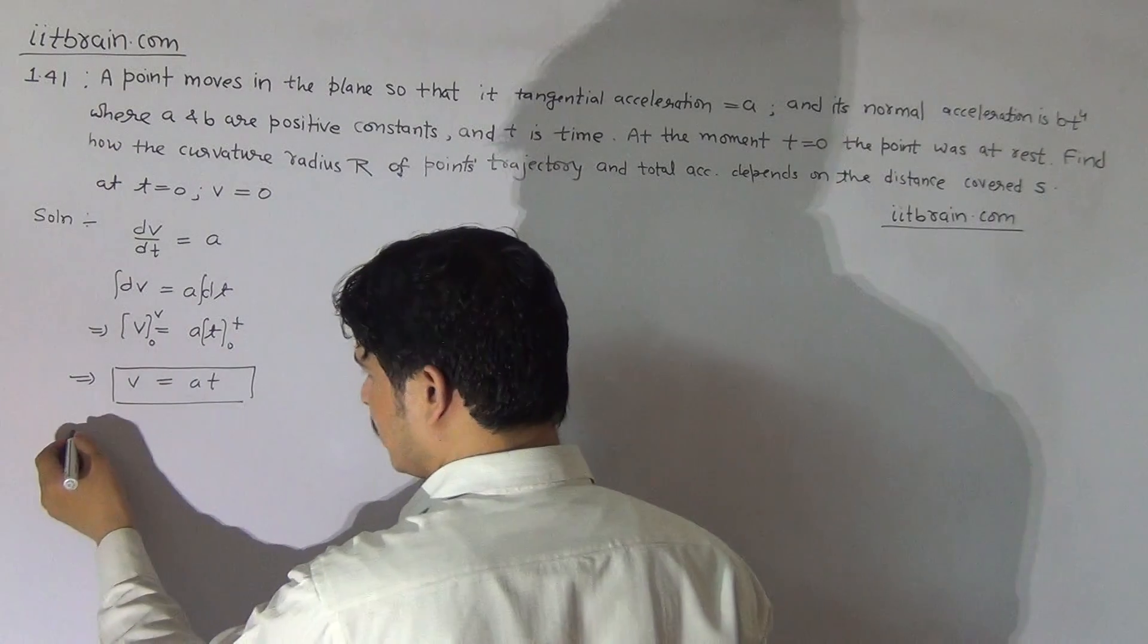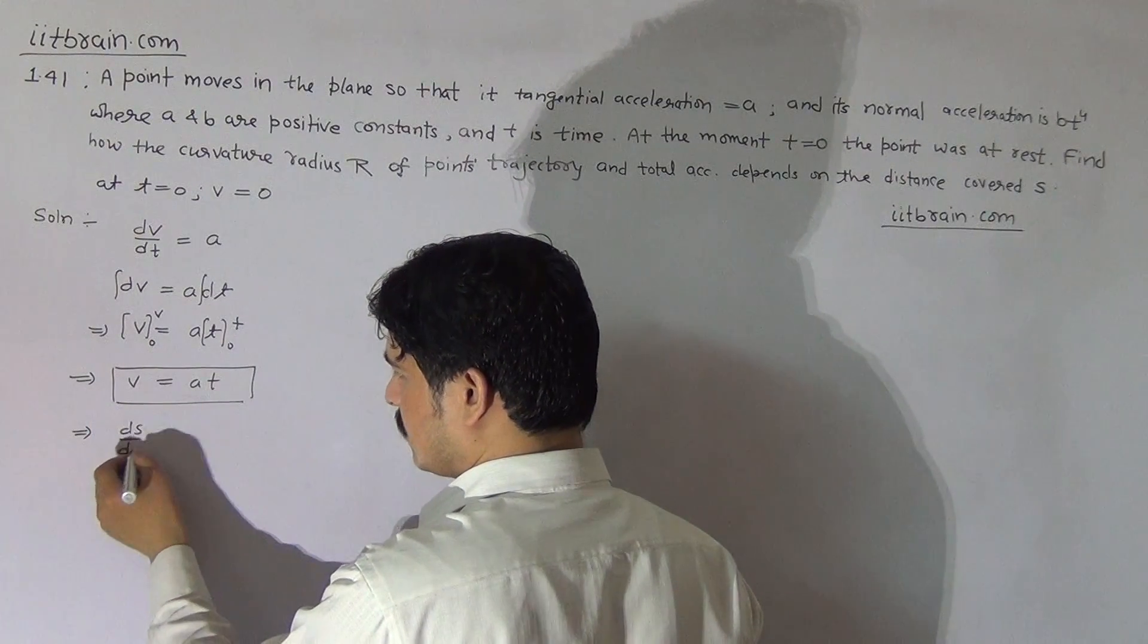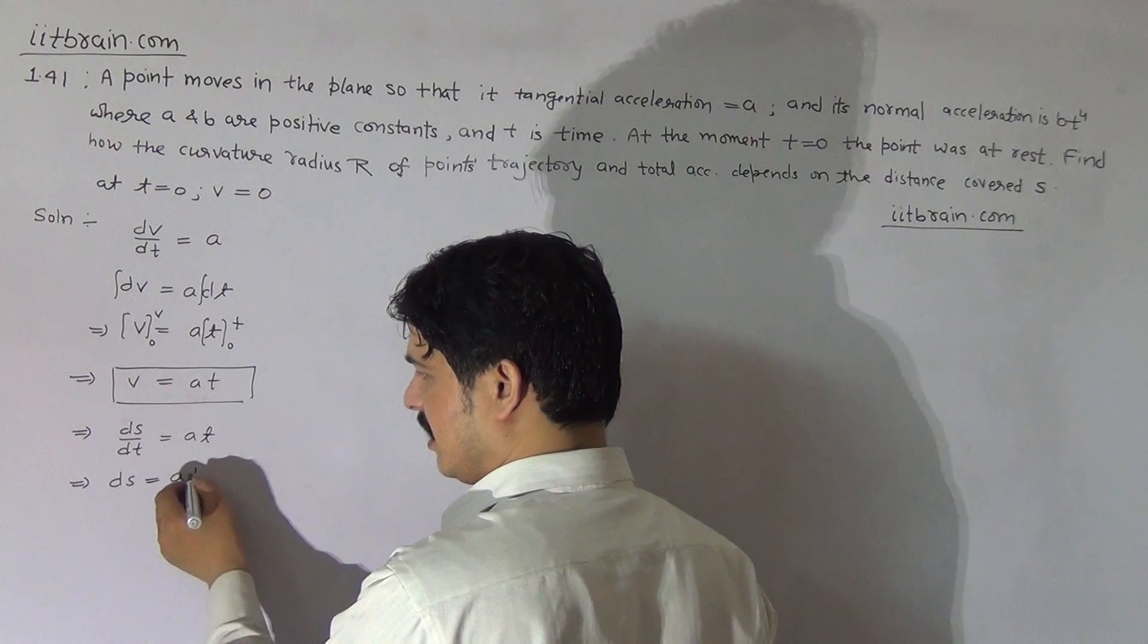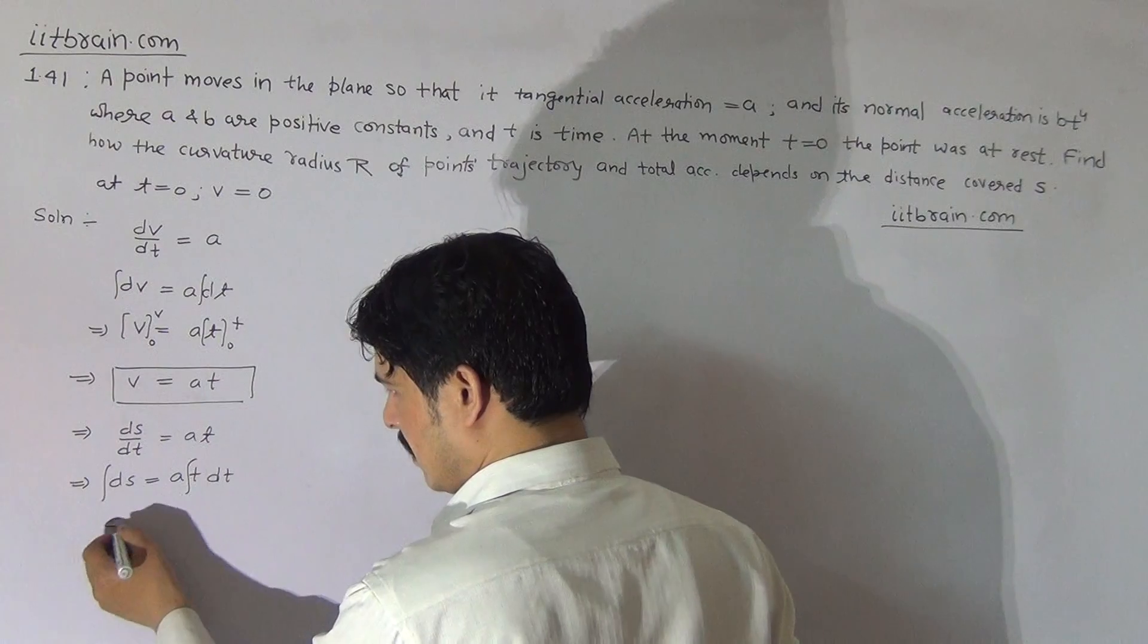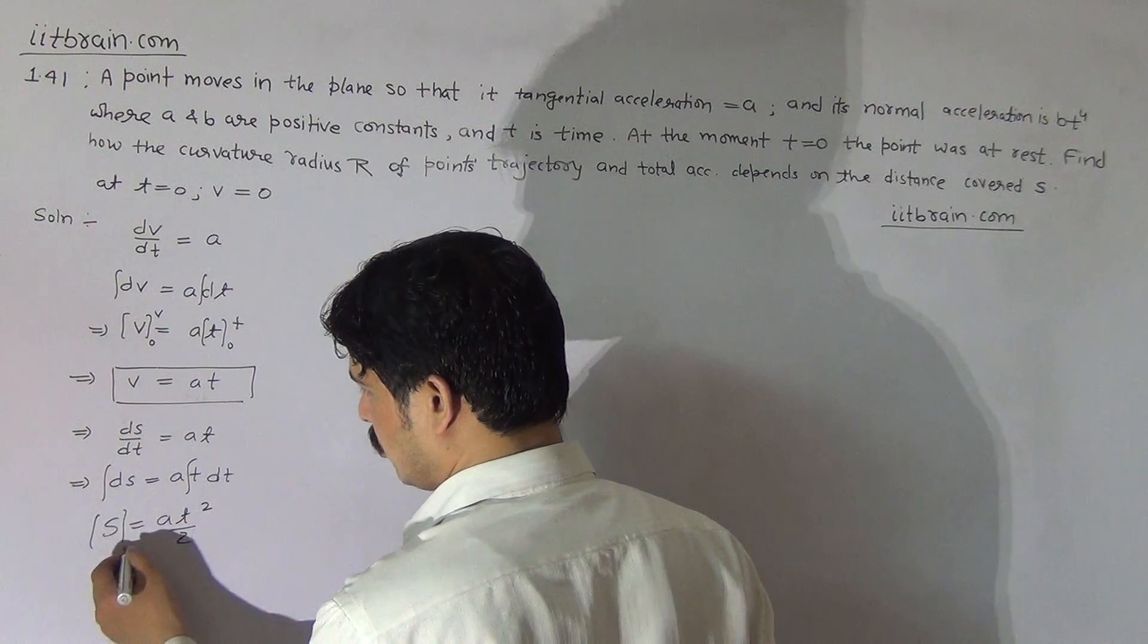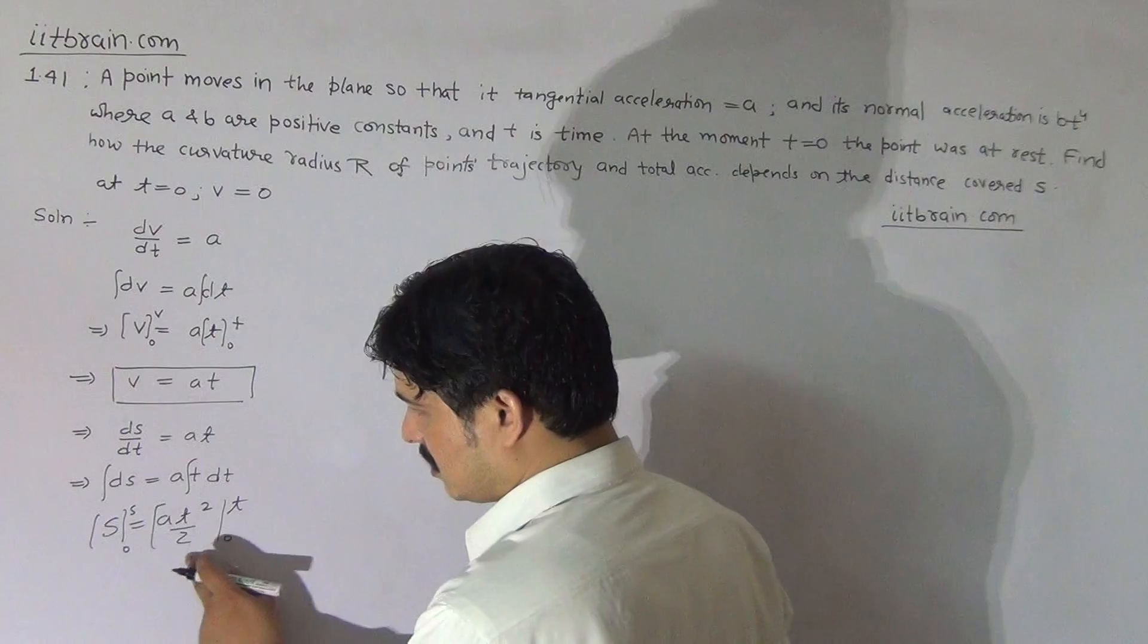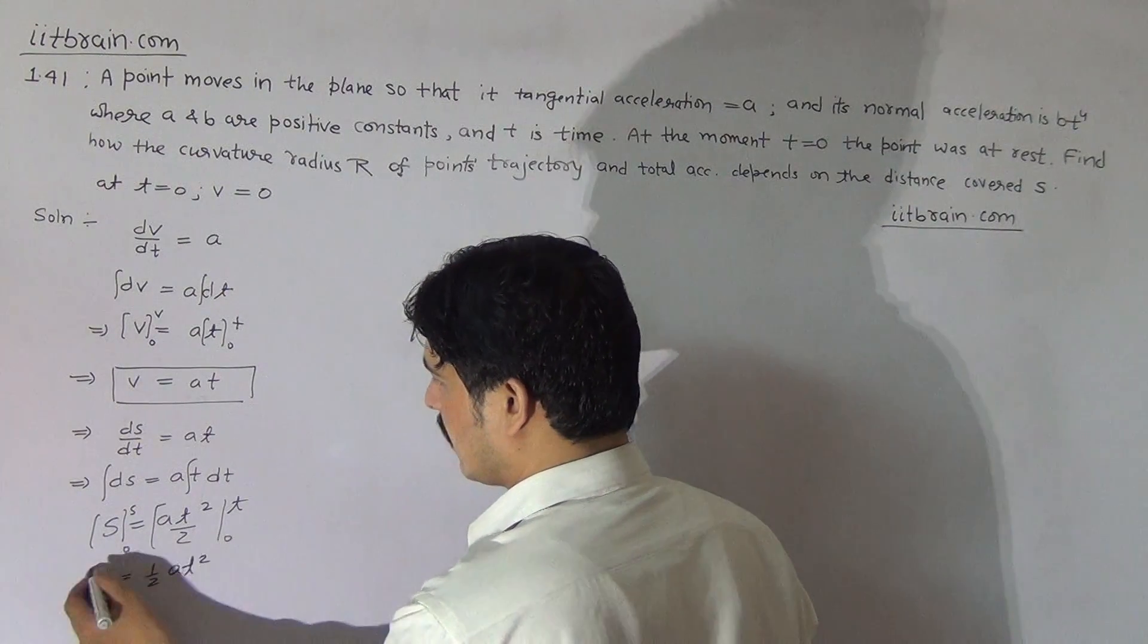For finding a relation between distance and time, differentiate with respect to time. V can be taken as dS by dt, and this implies dS is At dt. On integrating it again with limits from 0 to S and for time from 0 to t, S will become At square by 2. So S equals half At square.